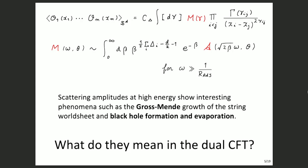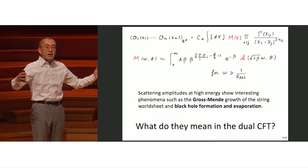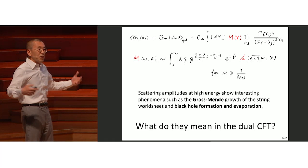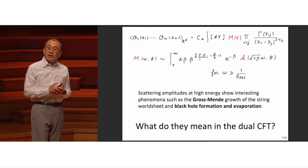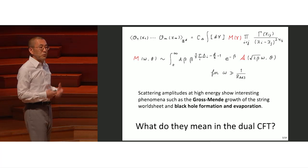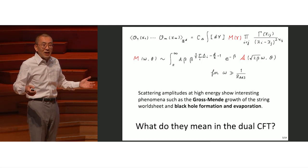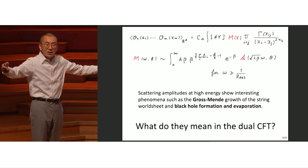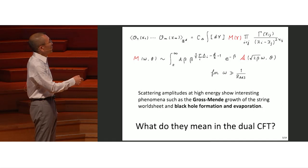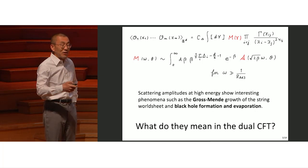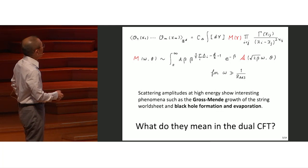Scattering amplitudes satisfy various interesting phenomena such as Gross-Mende growth in high-energy scattering in flat space. The amplitude is supposed to grow when energy at fixed angle becomes large compared to the string scale. Eventually you start forming black holes that evaporate. How you see that in ADS-CFT is an interesting question, and this formula gives us a way to probe such phenomena. This relation is only valid in a certain energy scale, because flat space amplitude doesn't know about ADS scale.